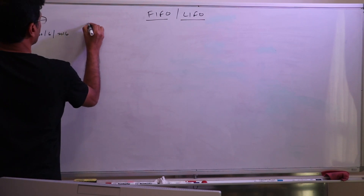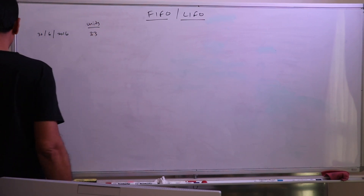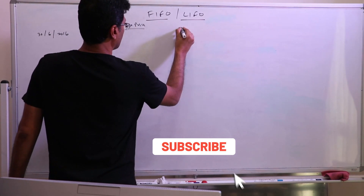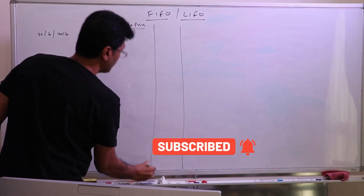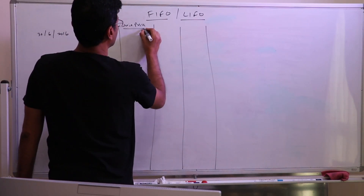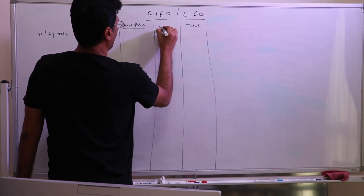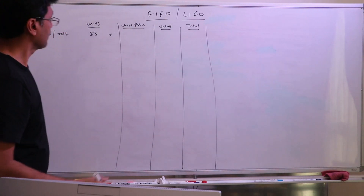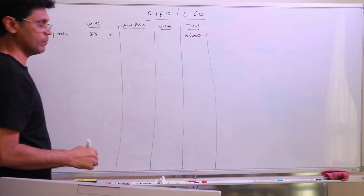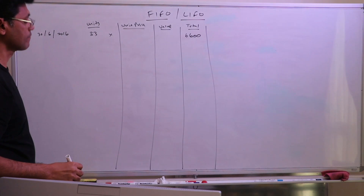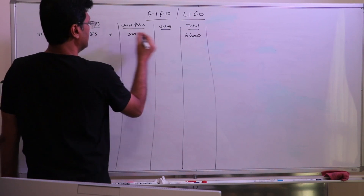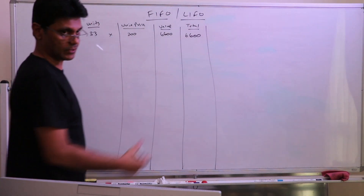Opening units: 33. You are not given the unit price — only the total cost is given. So I will take 3 columns: units, unit price, and total value. The total valuation is $6,600. Divide by 33: that gives us $200 per unit. So 200 times 33 equals $6,600 total.